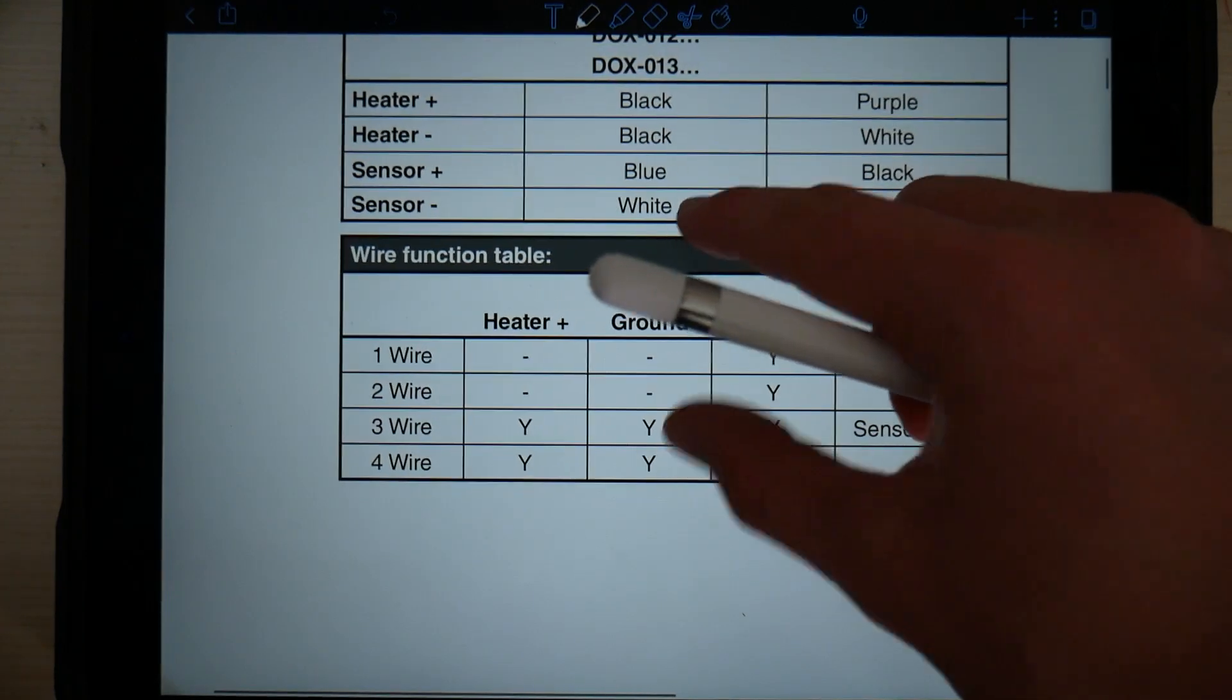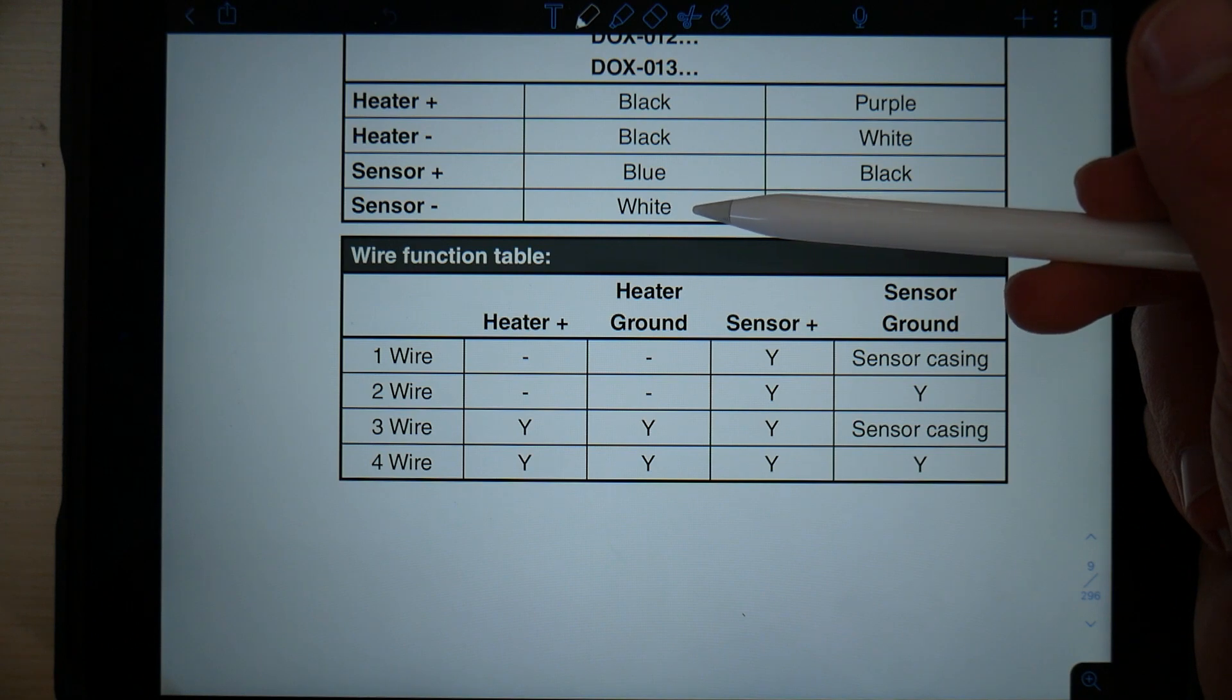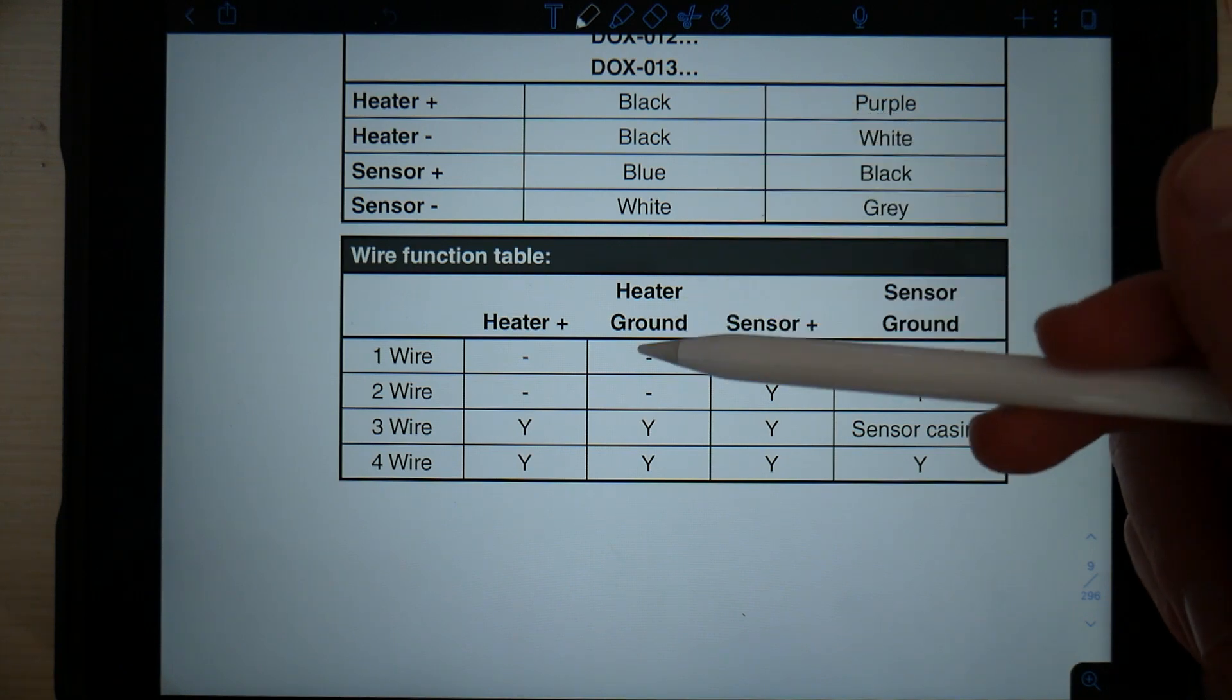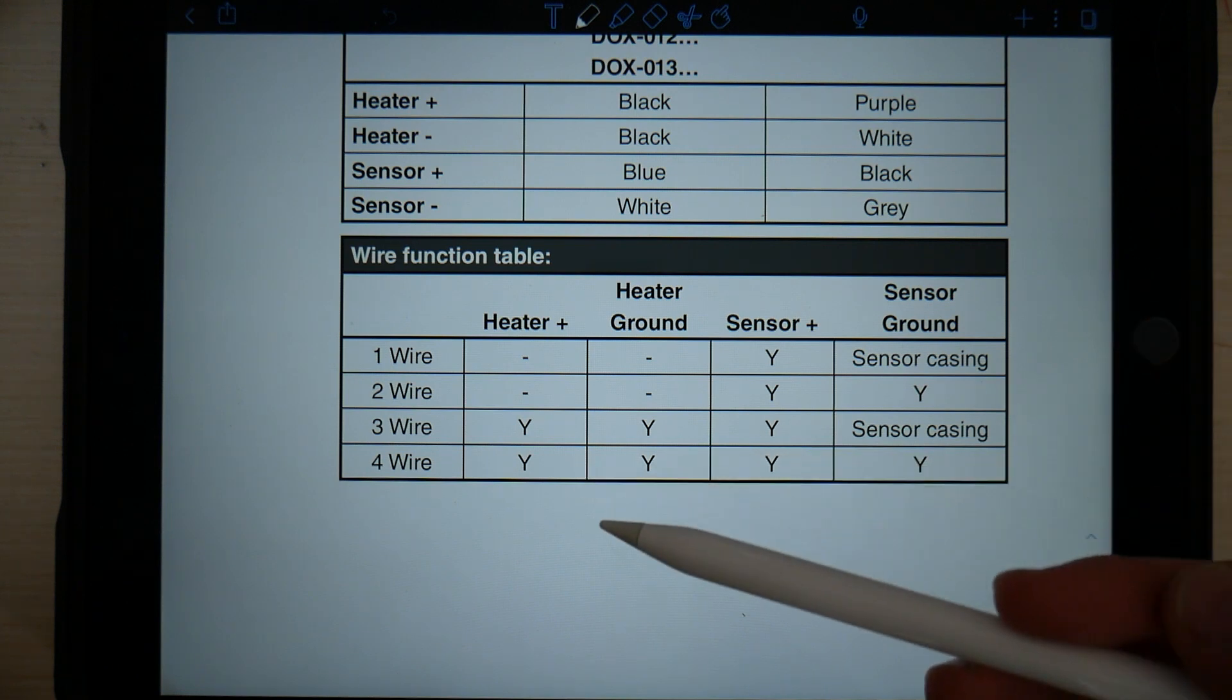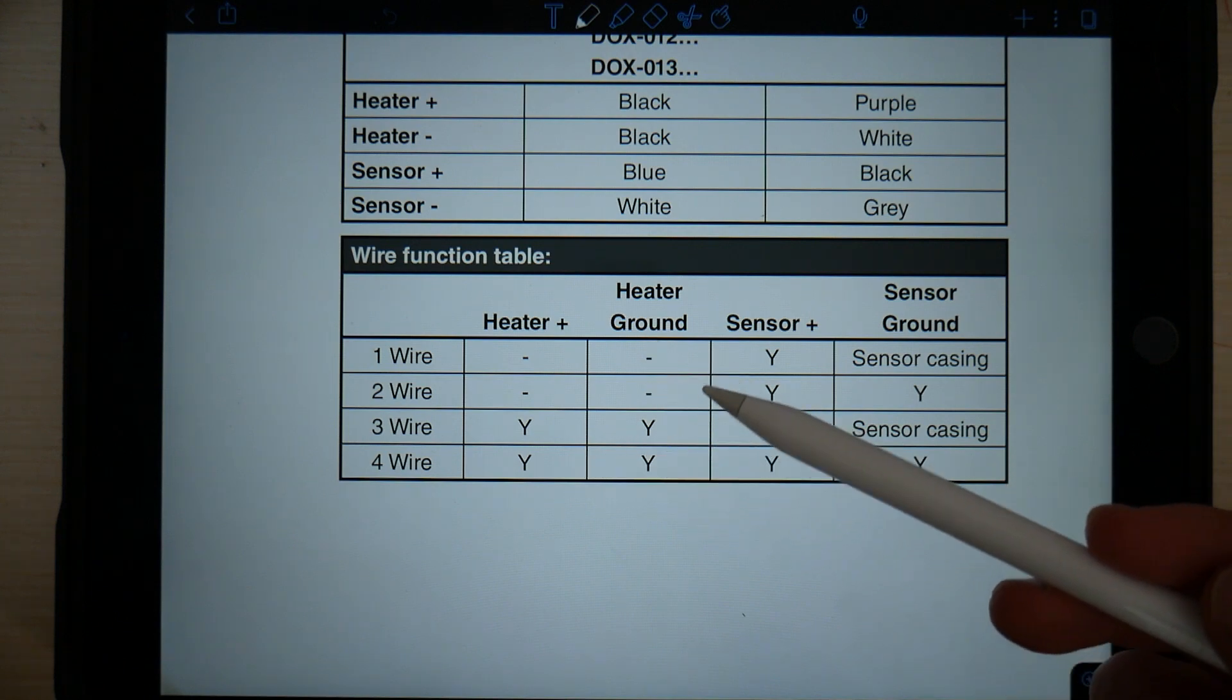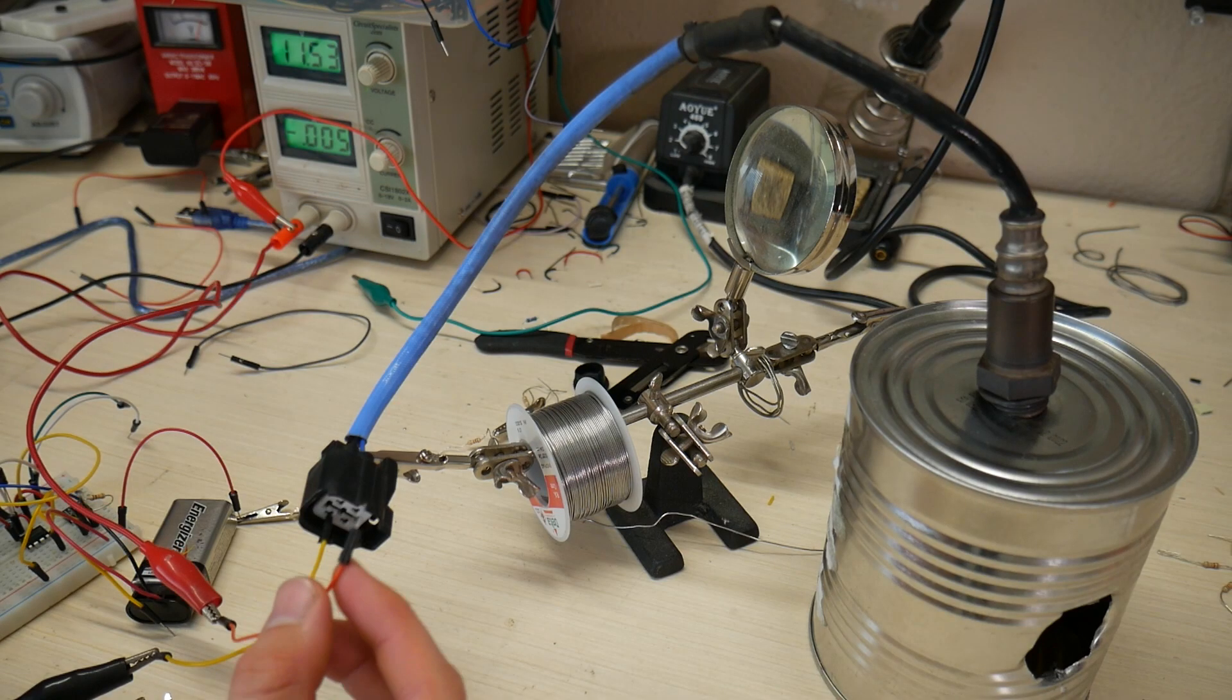This states that the blue wire is sensor plus, the white wire is sensor minus, and both black wires are the heater wires. And then on a four wire oxygen sensor, we have the heater wire, the ground, the sensor wire, and the sensor ground. As you can see on the four wire, there's nothing saying the sensor casing is electrically connected to anything in the circuit of the sensor.